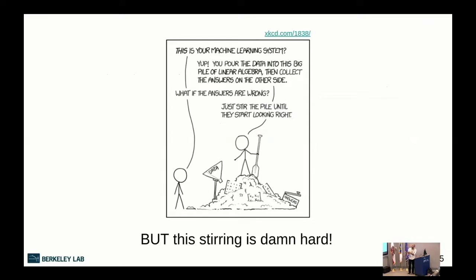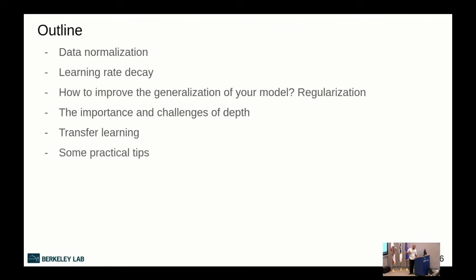There's an XKCD comic illustrating machine learning: pour data into a big pile of linear algebra, collect the answers on the other side — and if the answers are wrong, just stir the pile until they start making sense. Of course this is facetious, but in practice we do need to do a lot of stirring, and it isn't easy. Today we'll talk about data normalization, learning rate decay, regularization, depth, transfer learning, and some practical tips.